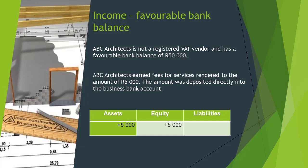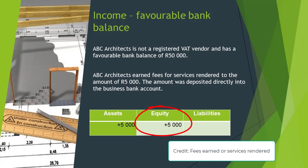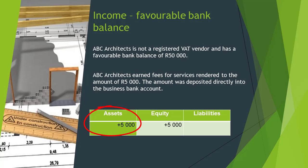In this case, the business earned fees and therefore income will increase equity with 5,000 Rand. The income account — fees earned or services rendered — will be credited. On the other hand, the bank account, which is an asset, increased with the money that was deposited. Therefore, we will see an increase of 5,000 Rand under assets, and the bank account will be debited with the 5,000 Rand.